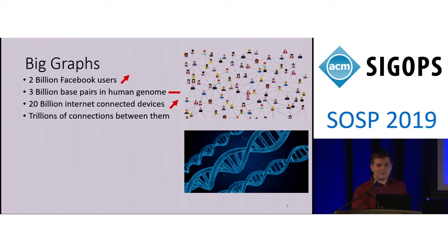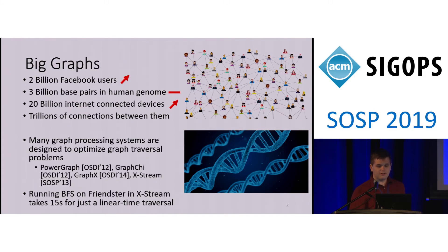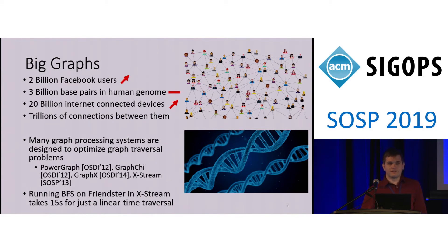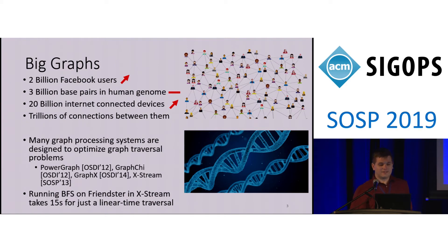Many systems have been created to traverse large graphs, including PowerGraph, GraphGraph, GraphX, and XStream, all within this community. Running breadth-first search, a linear complexity algorithm, on the 1.8 billion edge social network Friendster takes 15 seconds on XStream. And since graph mining will be a larger-than-linear time complexity, that's going to get expensive.